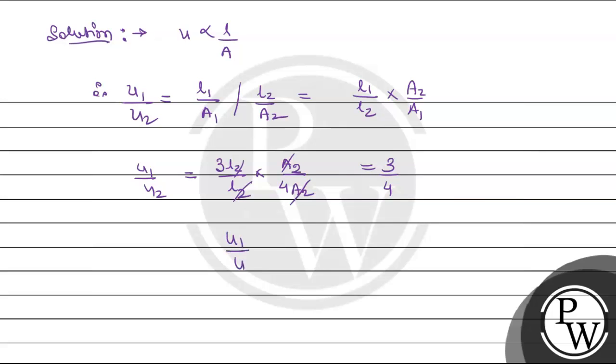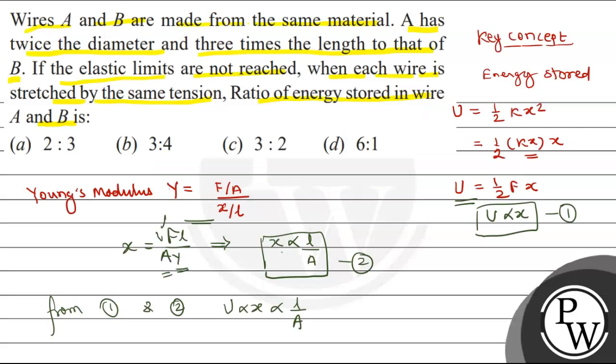So u1 upon u2 is equal to 3 by 4. So this ratio we have. This is the final answer. Let's see which option is the correct option. So we have option 3 is to 4. Option B is the right option.